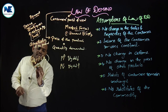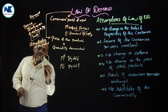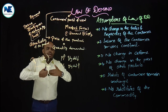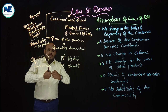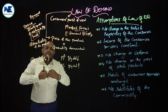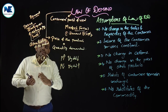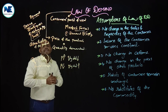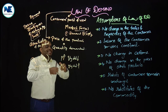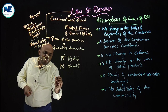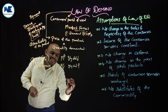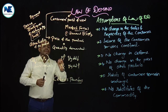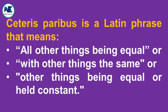We stated that there is an inverse relationship between price and quantity demanded. For this situation to be applicable, there should be some conditions fulfilled — and those conditions are captured by the phrase ceteris paribus, which means 'other things being equal' or 'other things remaining the same.'